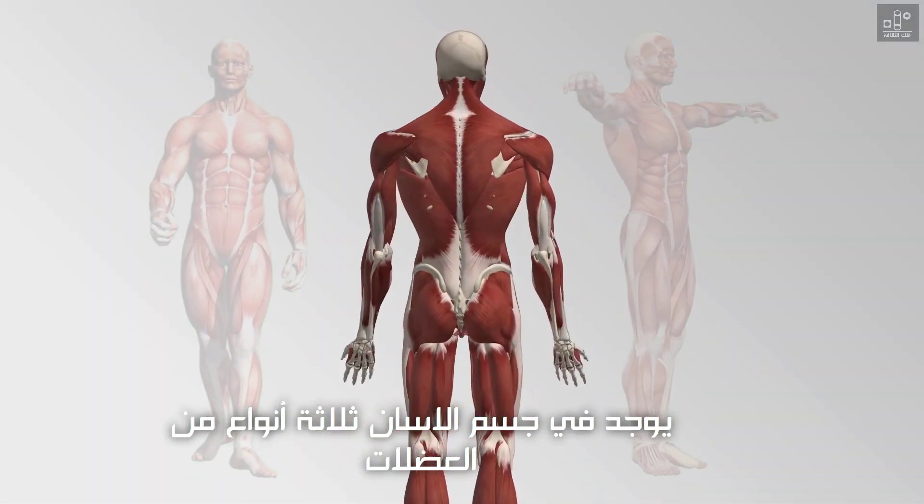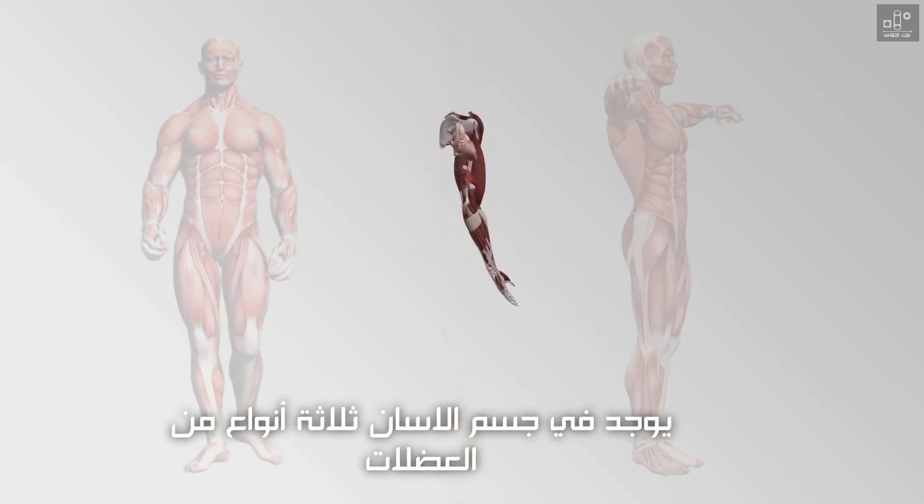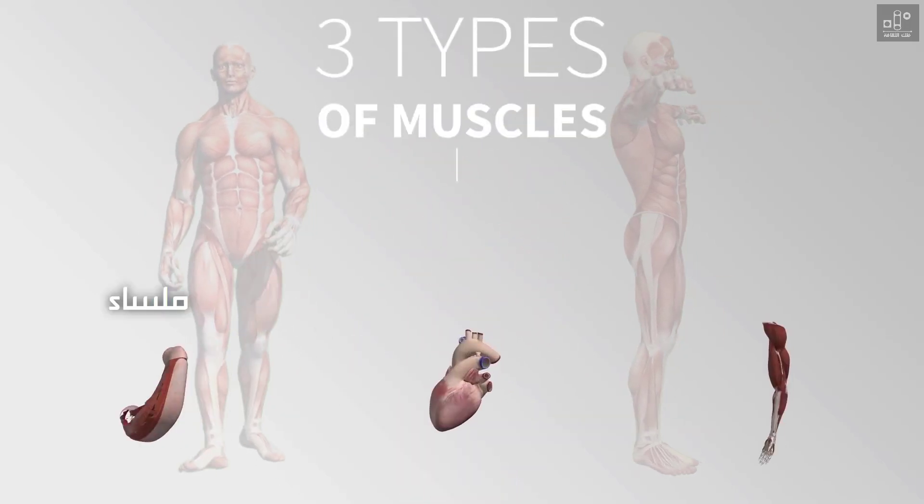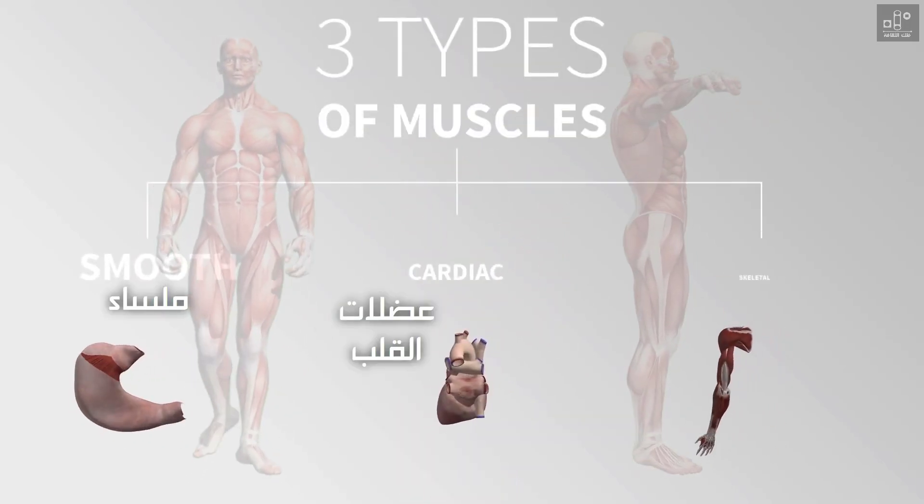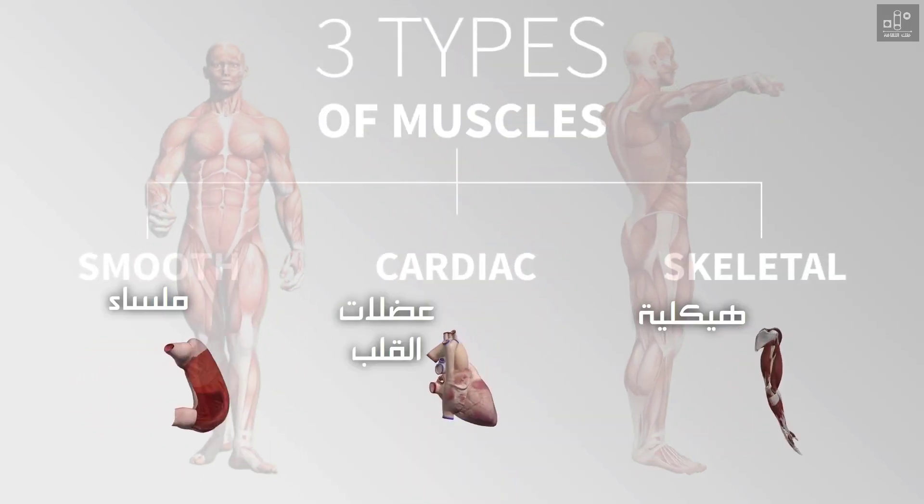Three types of muscles are contained within the human body: smooth, cardiac, and skeletal muscles.